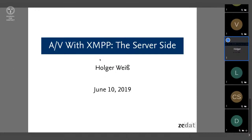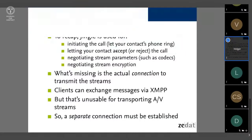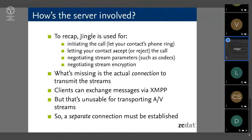To recap: Jingle, as Daniel explained, is used for negotiating the audio-video streams — for initiating the call, letting your contact accept or reject it, negotiating RTP parameters, and stream encryption. What's missing after that is the actual connection to transmit the configured streams. You could say clients already have a connection via XMPP to exchange messages and Jingle communication, but that's not usable for transporting actual audio-video streams — it would add way too much latency. So a separate connection must be established. The optimal solution is a peer-to-peer connection, but that's not always possible because usually both sides are behind NAT.